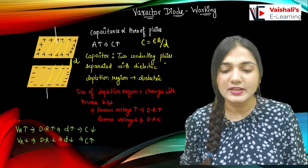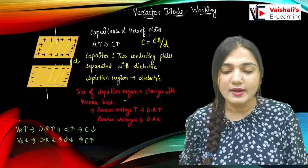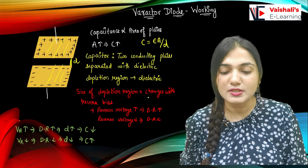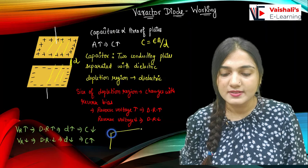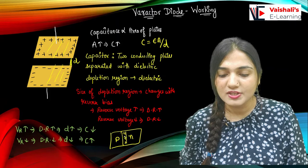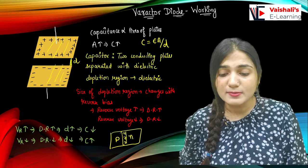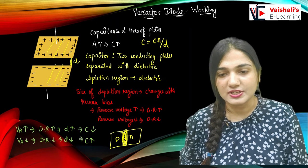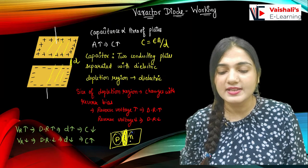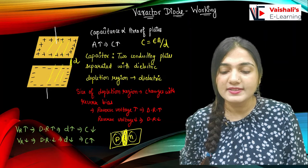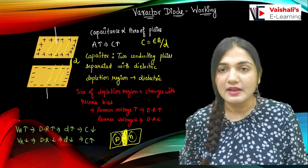In the diode we can also form a capacitor. The size of the depletion region changes with the reverse bias. In the diode we have a P region and an N region. In the N region we have positive immobile ions, and in the P region we have negative immobile ions. We have a depletion region that does not have any charge carriers, and this depletion region acts like a dielectric. The P and N regions, having lots of charge carriers, act like the two conducting plates, while the depletion region acts like the dielectric.